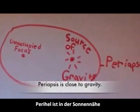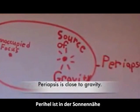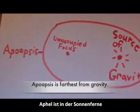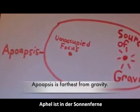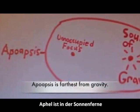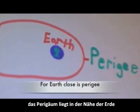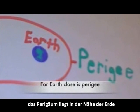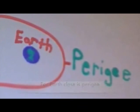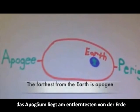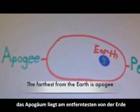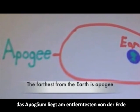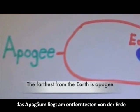Periapsis is close to the source of gravity. Apoapsis is farthest from gravity. For Earth, the closest point is perigee. The farthest from the Earth is apogee.